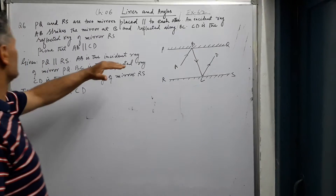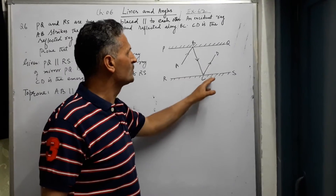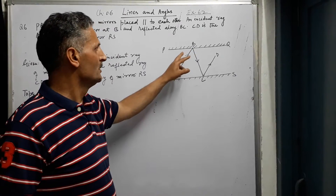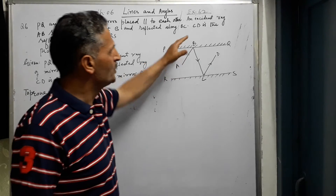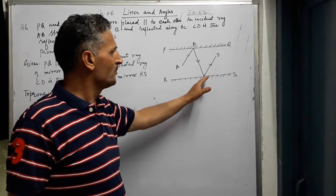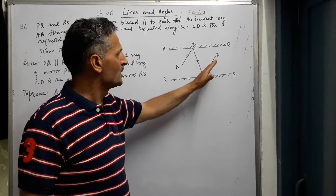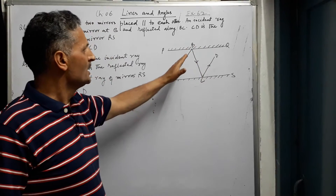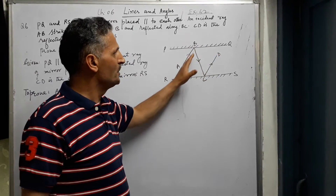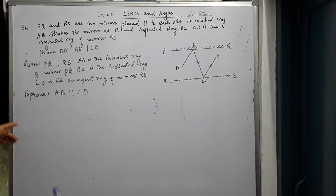What is given is as stated. What we have to prove is that AB is parallel to CD — that is, incident ray AB of mirror PQ is parallel to reflected ray CD of mirror RS. Or you can say the incident ray is parallel to the emergent ray CD. This is what we have to prove.